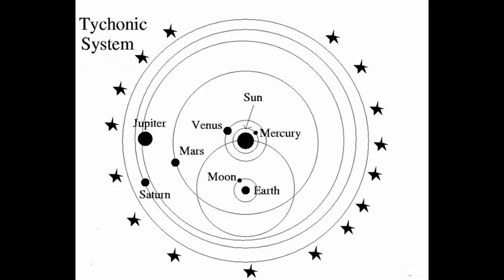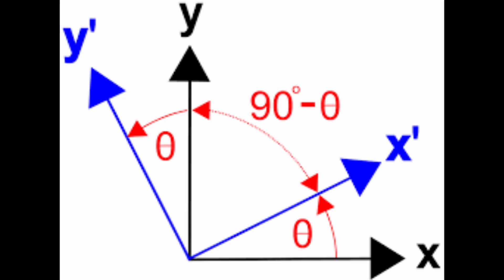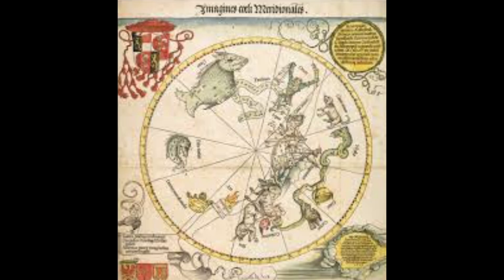Tycho proposed a compromise. He said that the solar system could be modeled by assuming all the other planets known at the time revolved around the Sun, but then said the Sun revolved around the Earth. Mathematically, this is known as a coordinate transform, and it resulted in the same conclusions as the Copernican models.